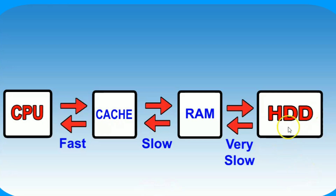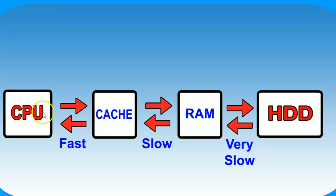The first time you play a video, the data will be stored in RAM, and the RAM will cache it, and the microprocessor will execute it. The second time you play the video, the video data will already be stored and will play faster.